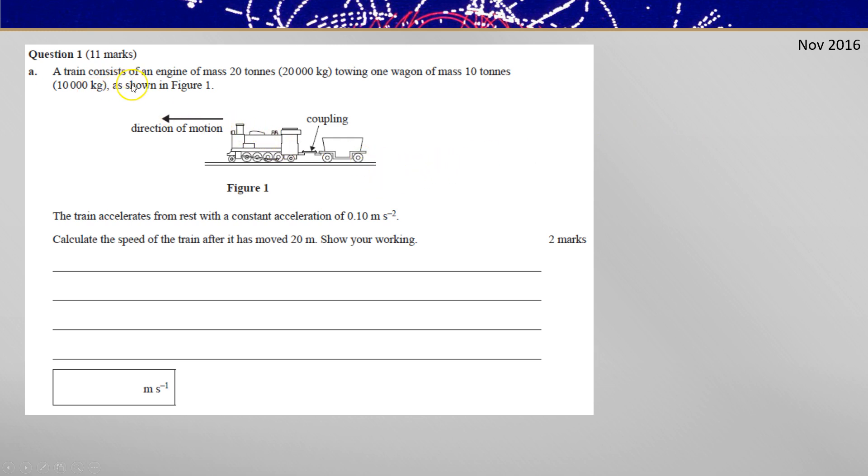The first question has a train of an engine 20 tonnes towing a wagon of 10 tonnes. The train accelerates from rest with a constant acceleration of 0.10 metres per second squared. Calculate the speed of the train after it has moved 20 metres.